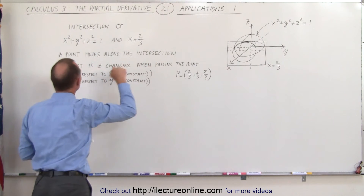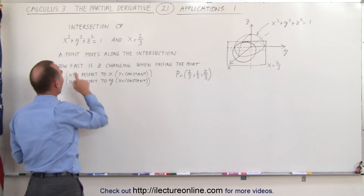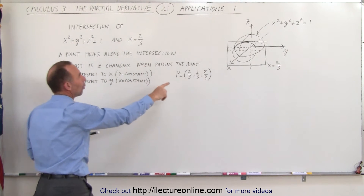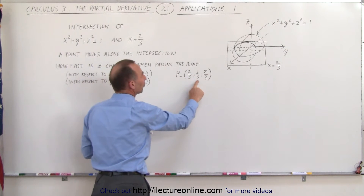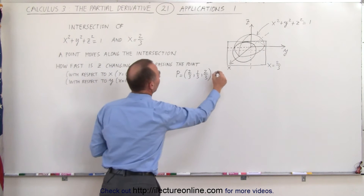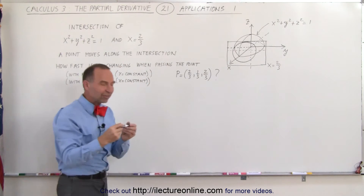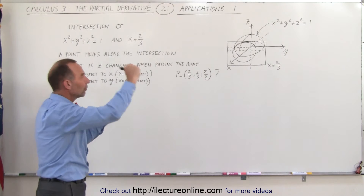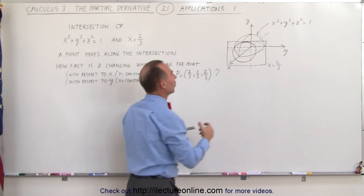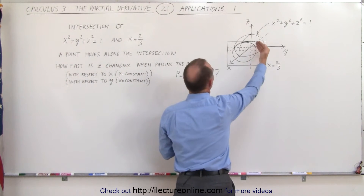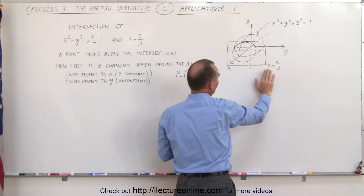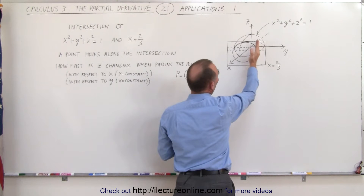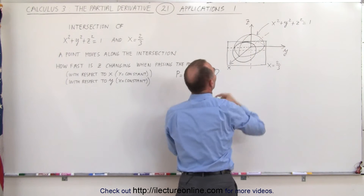We're now going to move along that intersection circle, and the question is: how fast is z changing when passing the point P, where x equals two-thirds, y equals one-third, and z equals two-thirds? That means you're on the plane, one-third to the right of the origin in y, and up two-thirds in z.